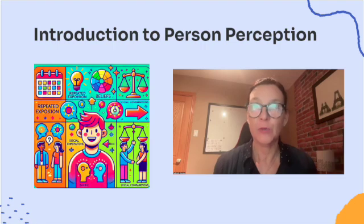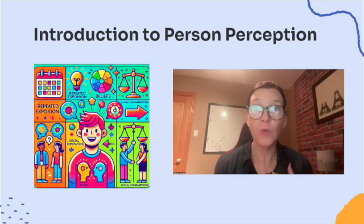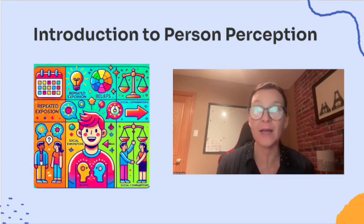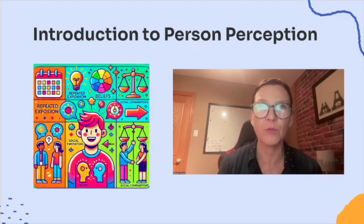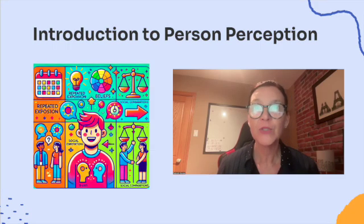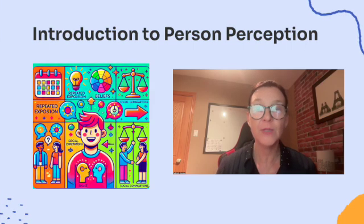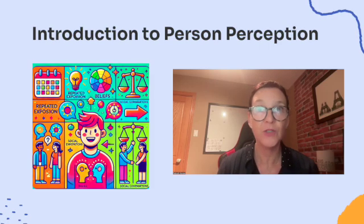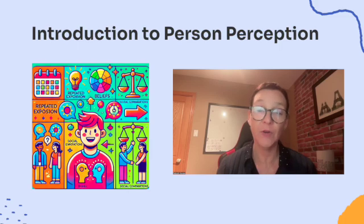Let's start off by talking about person perception. This is a fascinating concept in psychology because it explains how we form impressions and judgments about others and also about ourselves. Understanding this helps us see why we think and act the way we do in social situations. Let's start with the definition, because that's always a really good place to start.